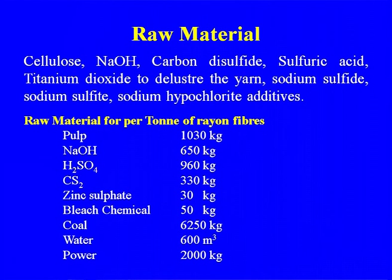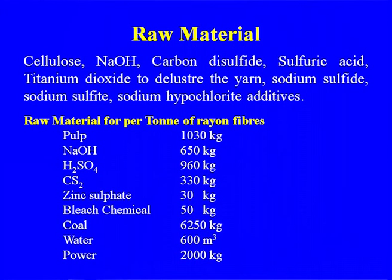The major raw materials used for making viscose rayon or acetate rayon are cellulose, caustic soda, carbon disulphide, sulphuric acid, titanium oxide (as delustrant), sodium sulphide, and sodium hypochlorite. Carbon disulphide is a particularly important raw material in viscose rayon, while acetic acid and acetic anhydride are used in other rayons. Raw material requirements for rayon fiber include pulp, NaOH, H₂SO₄, carbon disulphide, and zinc sulphate for the spinning bath, since viscose uses wet spinning — called the regenerated fiber wet spinning process.